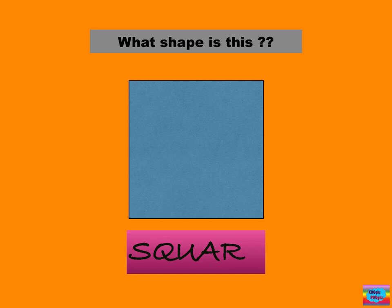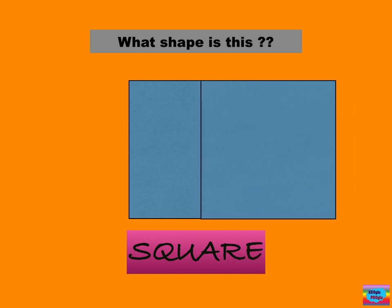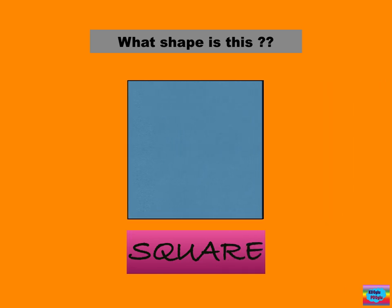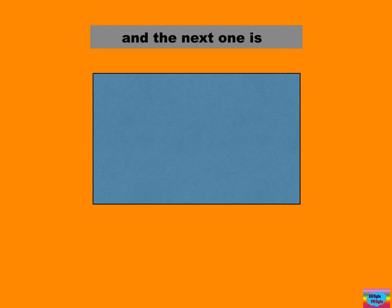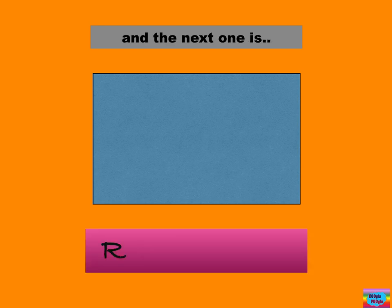S-Q-U-A-R-E. Here comes another square. And the next shape is a rectangle. R-E-C-T-A-N-G-L-E.